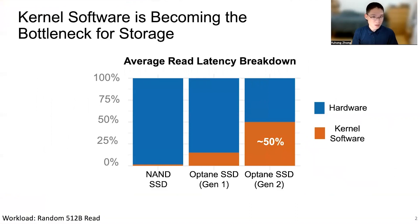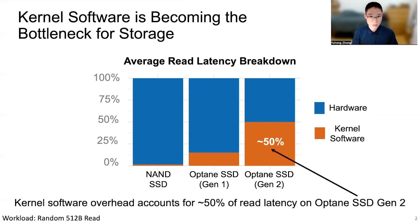With new storage technologies, storage devices are getting much faster. As a result, kernel software is becoming a bottleneck for storage. Let's take a look at the breakdown of the average latency of a random 512-byte read, which shows the percentage of time spent on hardware and kernel software with different types of disks. Kernel software overhead accounts for around 50% of read latency on the second generation of Optane SSD.